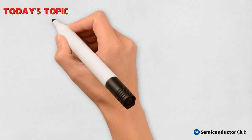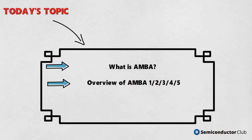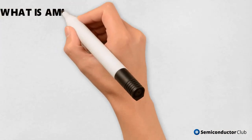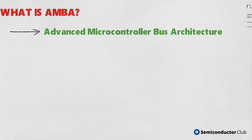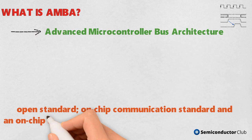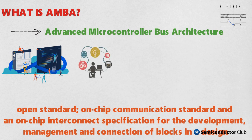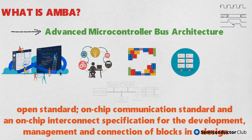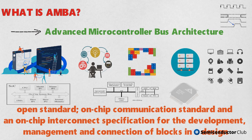In this video we will learn about what is Advanced Microcontroller Bus Architecture, AMBA — an overview of AMBA 1, 2, 3, 4, and 5, and an explanation of different AMBA protocols. Advanced Microcontroller Bus Architecture is generally defined as an open standard, on-chip communication standard and on-chip interconnect specification for the development, management and connection of blocks in a design. AMBA facilitates the development of multi-processor designs that have large numbers of controllers and peripherals. AMBA is used as the on-chip bus in system-on-chip designs, application-specific integrated circuits (ASICs), and high-level embedded microcontrollers.